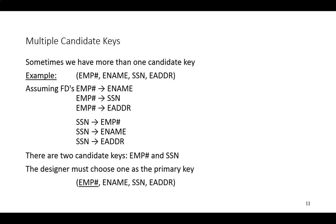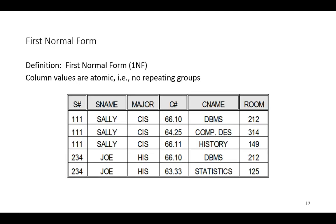Note that while there can be multiple candidate keys for a table or relation, there can be only a single primary key. As noted, the key could be composite — that is, it could consist of more than one column. And finally, we get to normalization itself: first normal form.